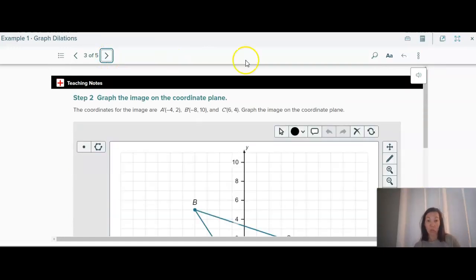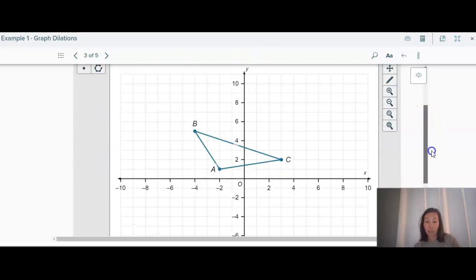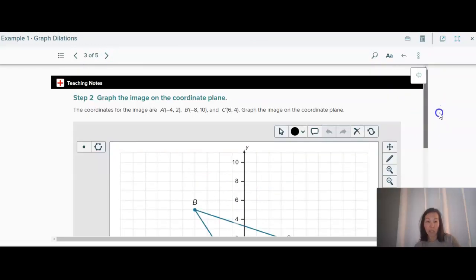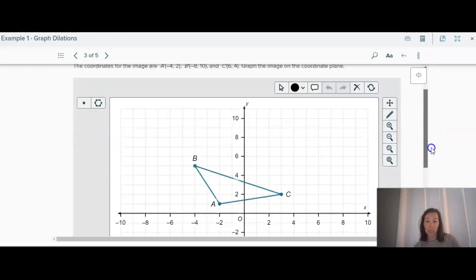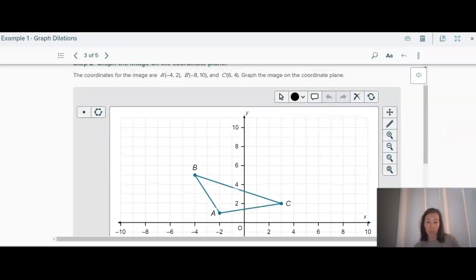So now step 2, here we have the coordinates of the original graph, and if I want to graph the new one, then we can just graph those new points here. So I'm just going to do it this way. It'll be easier. Negative 4, 2 is right here. Negative 8, 10 is up here. And 6, 4 is over here.